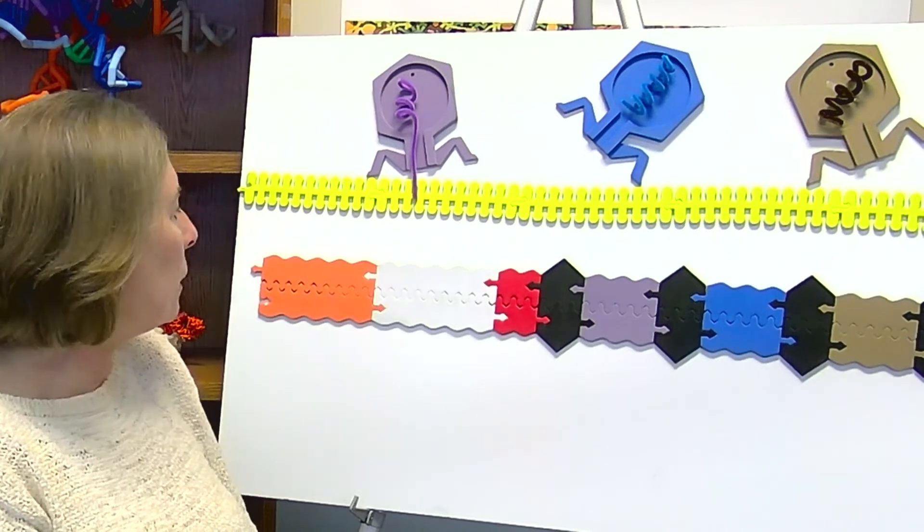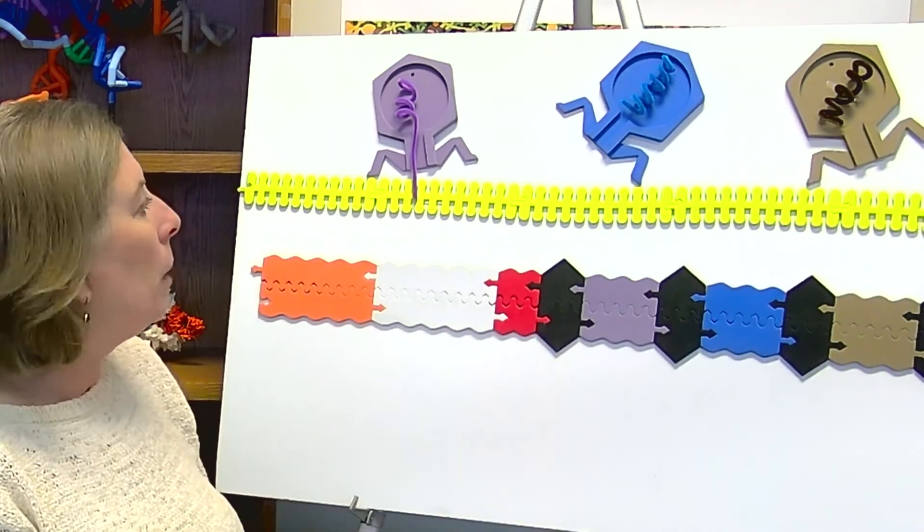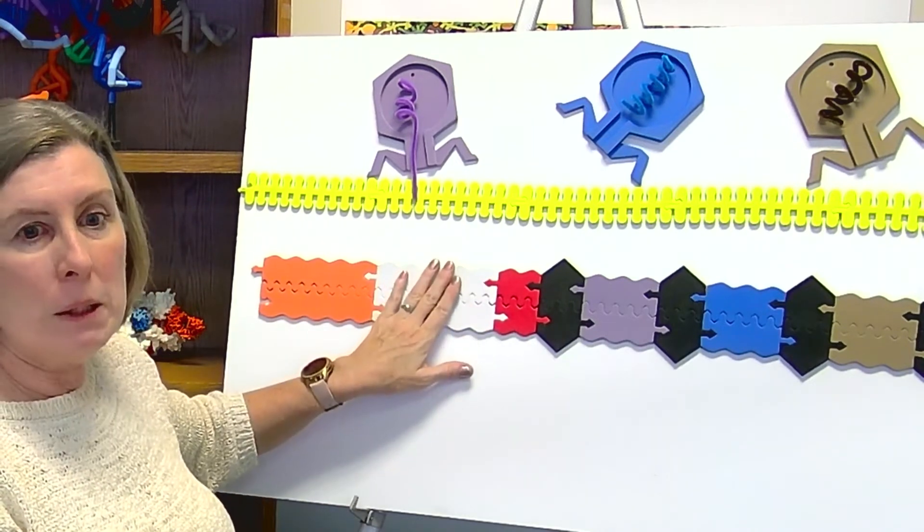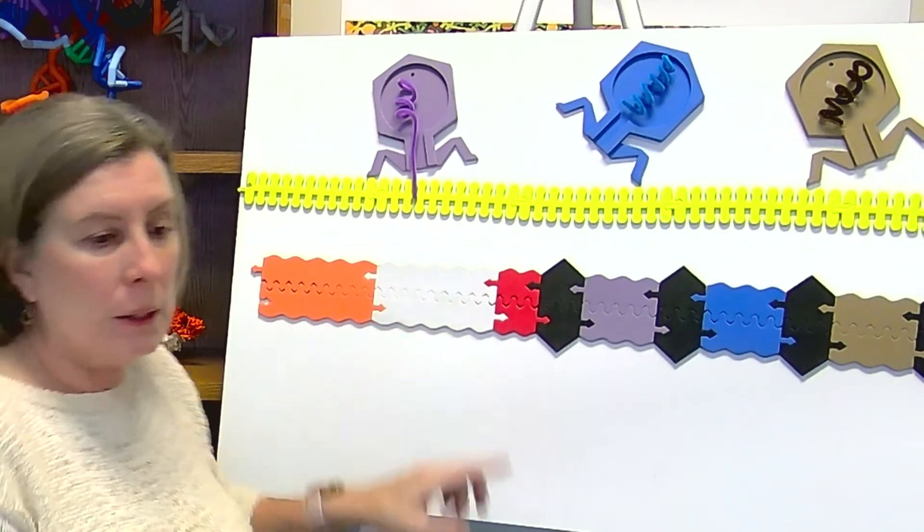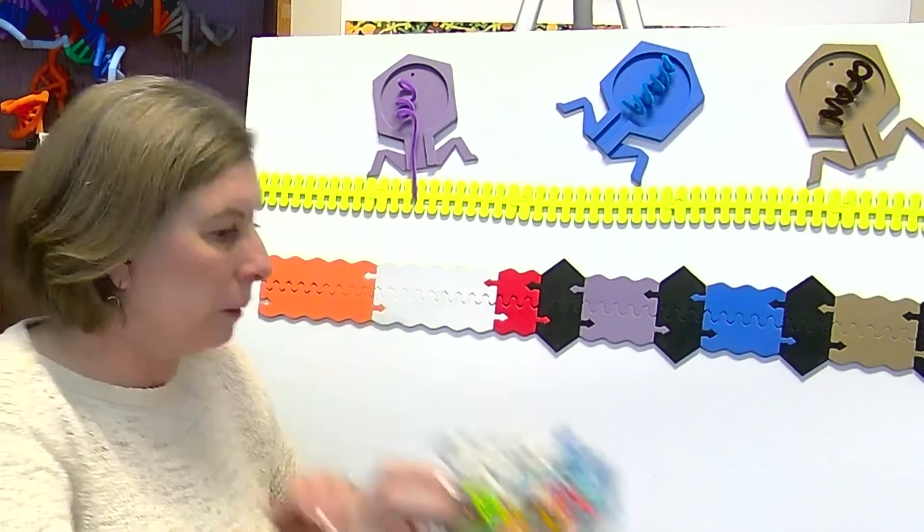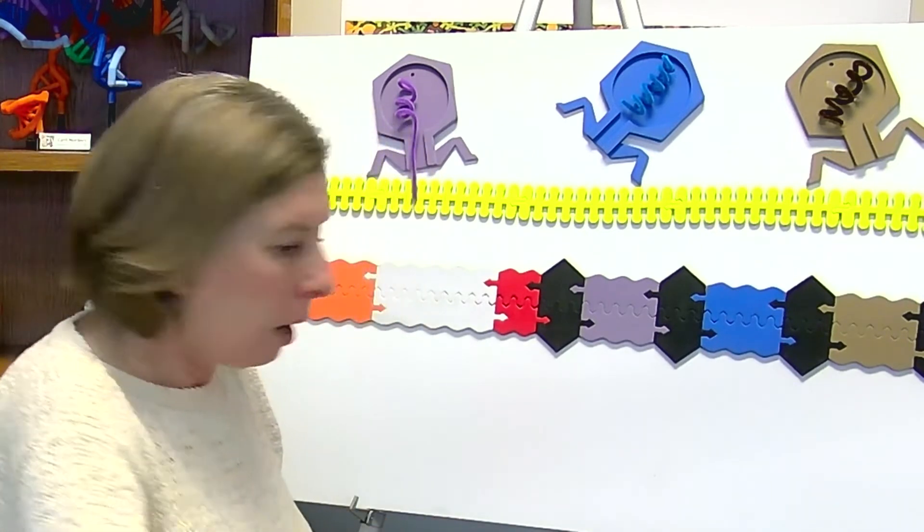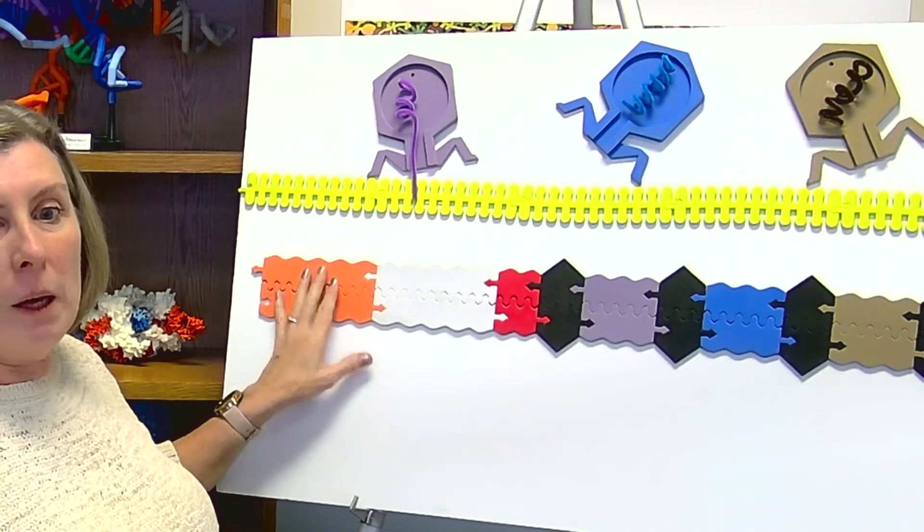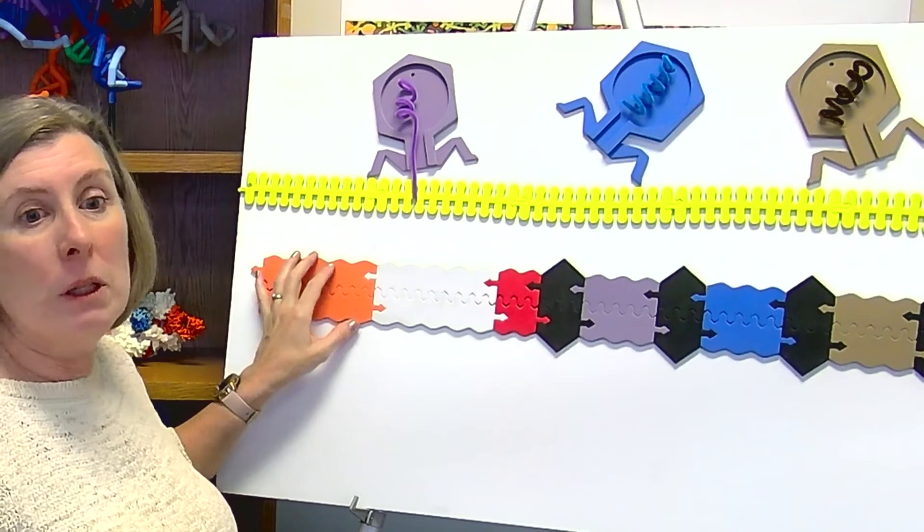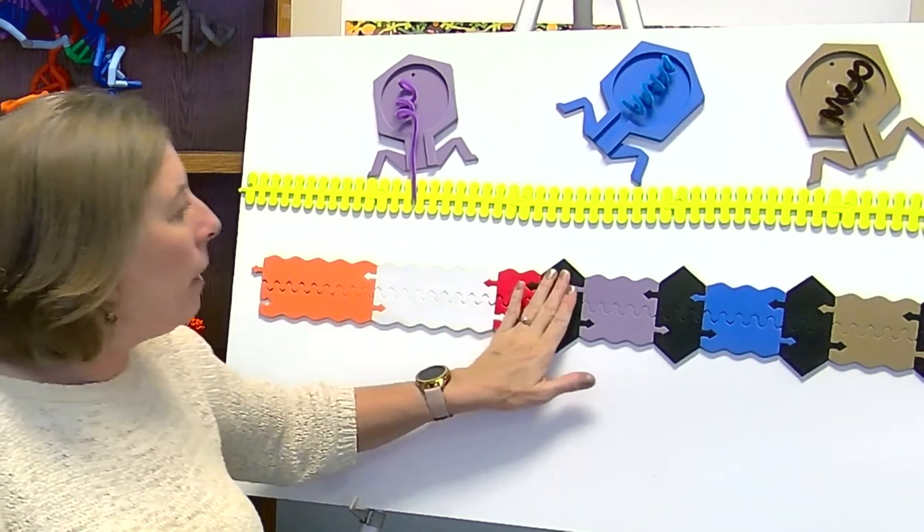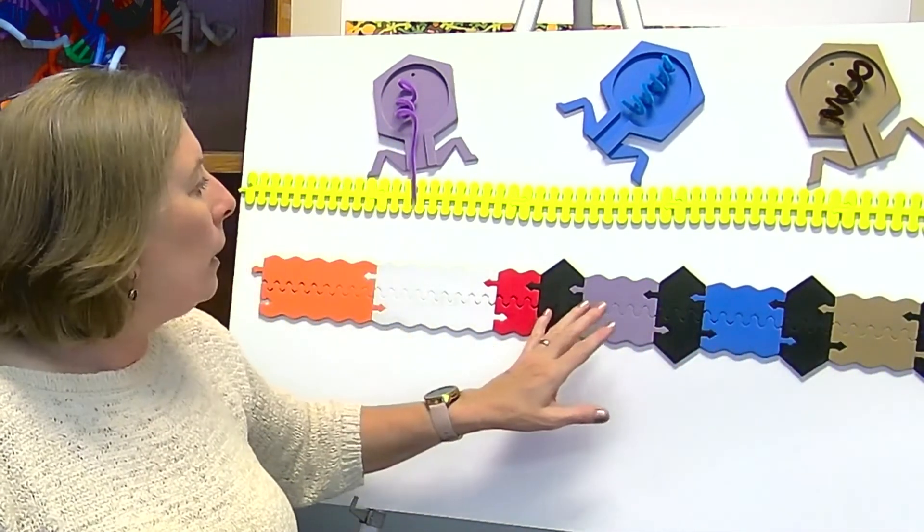So how does this work? The bacteria transcribes all of this, but it goes to different things. It transcribes this white piece here and then translates it into the Cas protein. It then transcribes this part of it, and that's the non-coding RNA known as the tracer RNA that we talked about before.